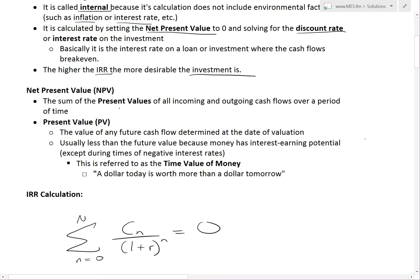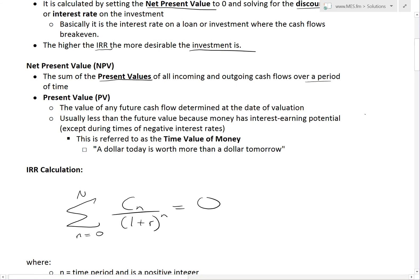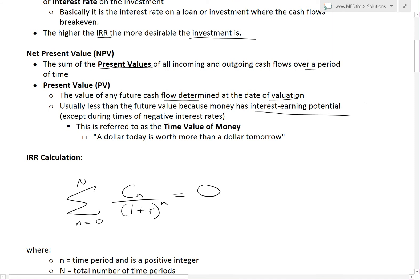The net present value is the sum of the present values of all incoming and outgoing cash flows over a period of time. Present value is the value of any future cash flows determined at the date of valuation. It's usually less than future value because money has interest-earning potential — except during rare times of negative interest rates, which is actually happening in Europe right now. This is referred to as the time value of money: a dollar today is worth more than a dollar tomorrow. For example, $100 ten years ago is worth more than it is now, due to inflation and the interest you could have been collecting.